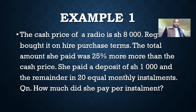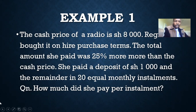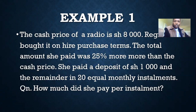Let me read the question once more clearly. The cash price of a radio is 8,000 shillings. Regina bought it on hire purchase terms. The total amount she paid was 25% more than the cash price. She paid a deposit of 1,000 and the remainder in 20 equal monthly installments. How much did she pay per installment?